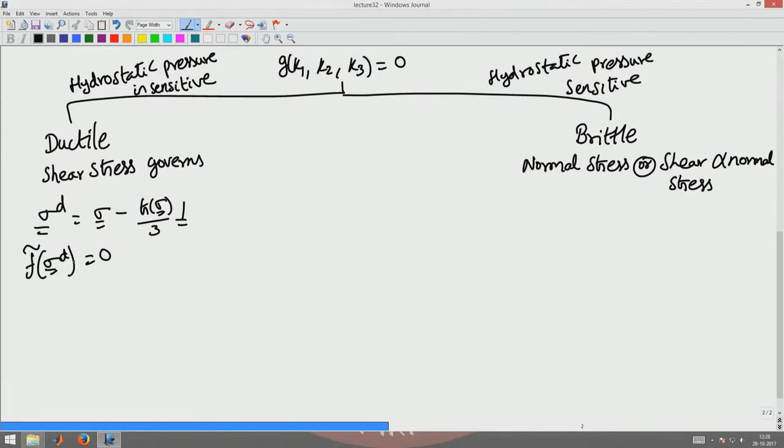Since trace of sigma d is always 0, this will depend from similar arguments that we made before, this will depend upon G tilde of K2d and K3d being 0, where K2d is defined as one half trace of sigma d squared and K3d is defined as determinant of sigma d.